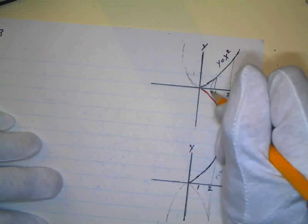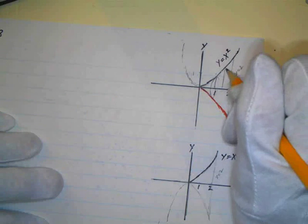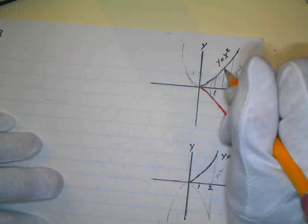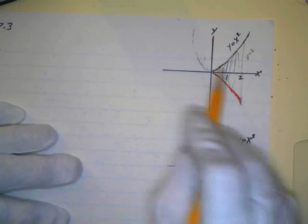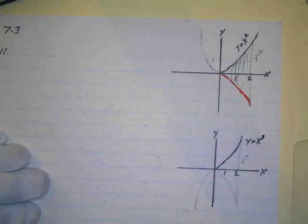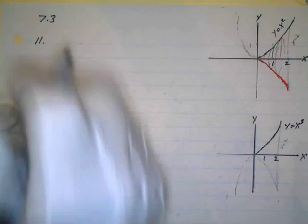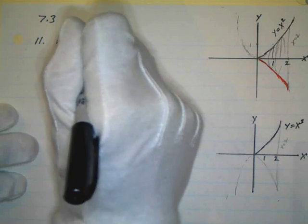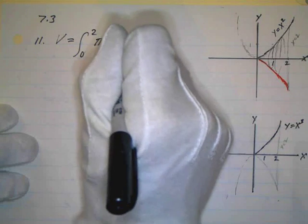That might be the radius and it would look something like this. They're going to go like this and they're going to be going from 0 to 2 and form these little circles. So I know the volume is going to equal the integral from 0 to 2 pi r squared dx.